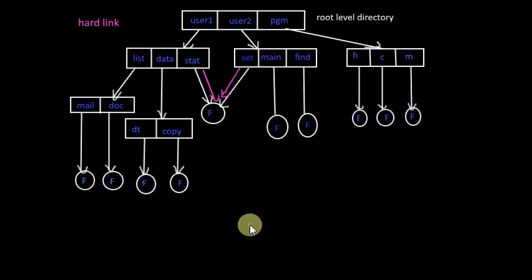The Acyclic graph directory structure is more flexible than the tree structure in which the sharing of files and directories is allowed from different directories, but the system should consider several problems.